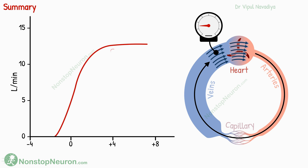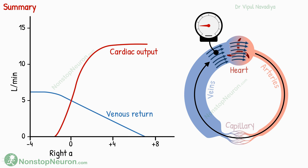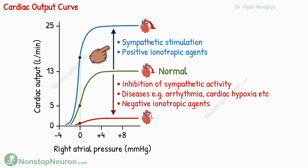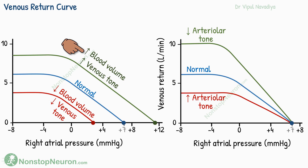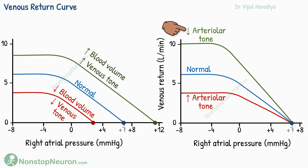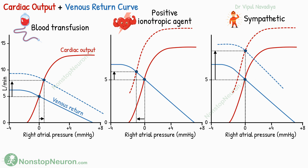Let's have a quick summary. The cardiac output curve and venous return curve depict changes in their respective parameters with changing right atrial pressure. Venous return and cardiac output can be equal at only one point where both curves intersect. Sympathetic stimulation and positive inotropic agents shift the cardiac output curve upward; inhibition of sympathetic activity, negative inotropic agents, and certain diseases shift it downward. An increase in intrapleural pressure shifts the cardiac output curve to the right, and a decrease shifts it to the left. Increasing blood volume or venous tone shifts the venous return curve upward; decreasing them moves it downward.